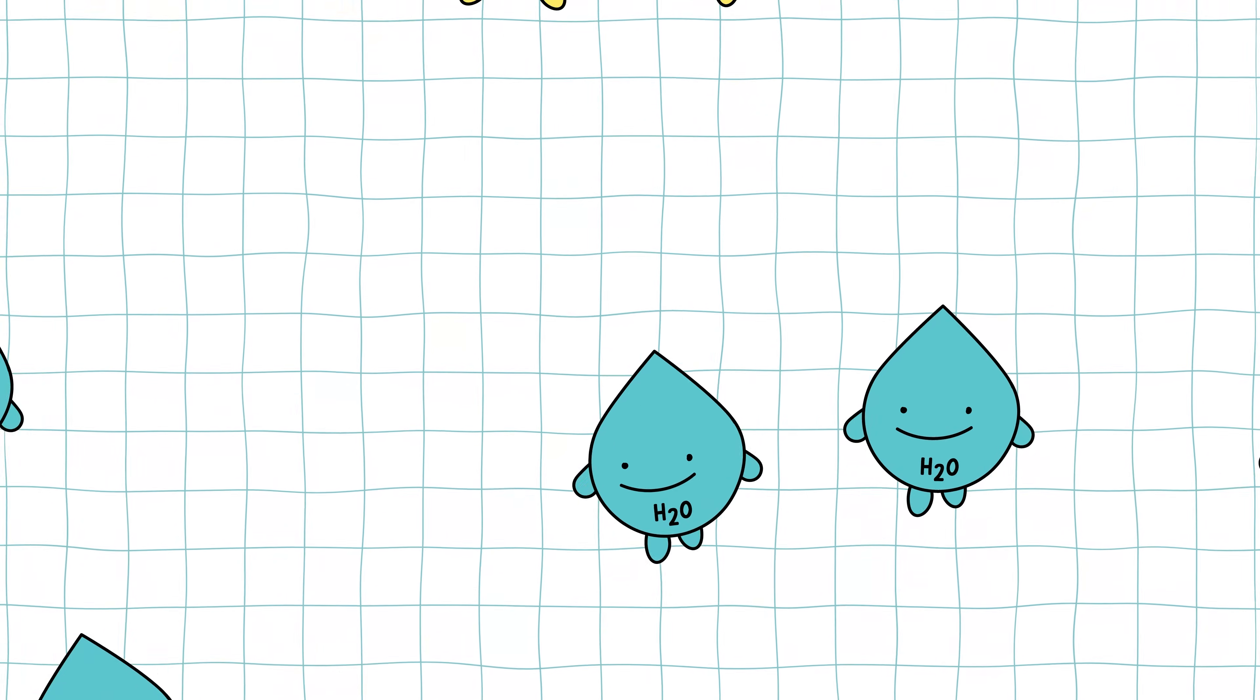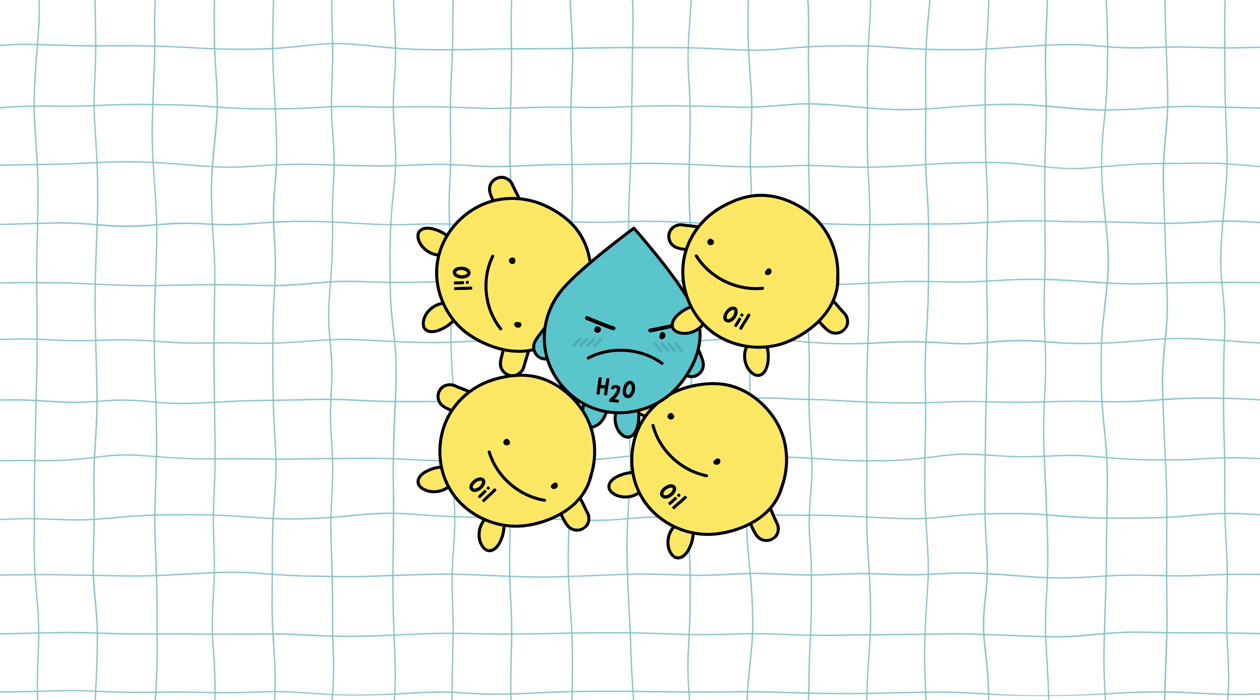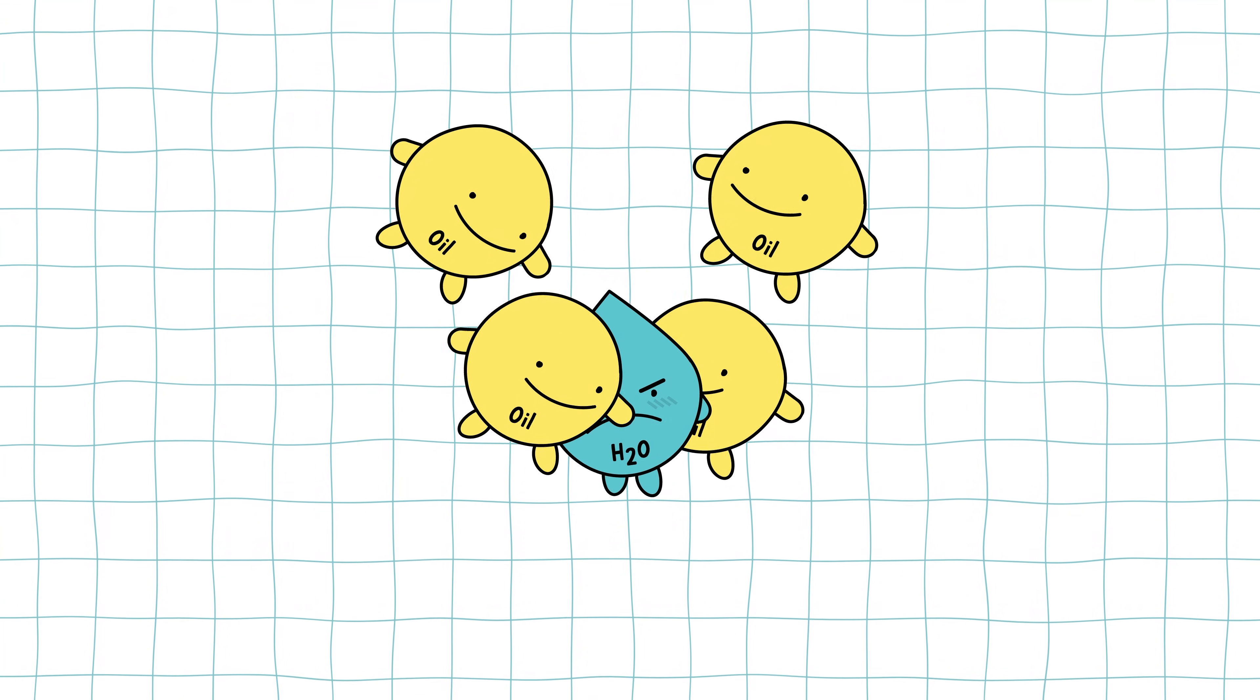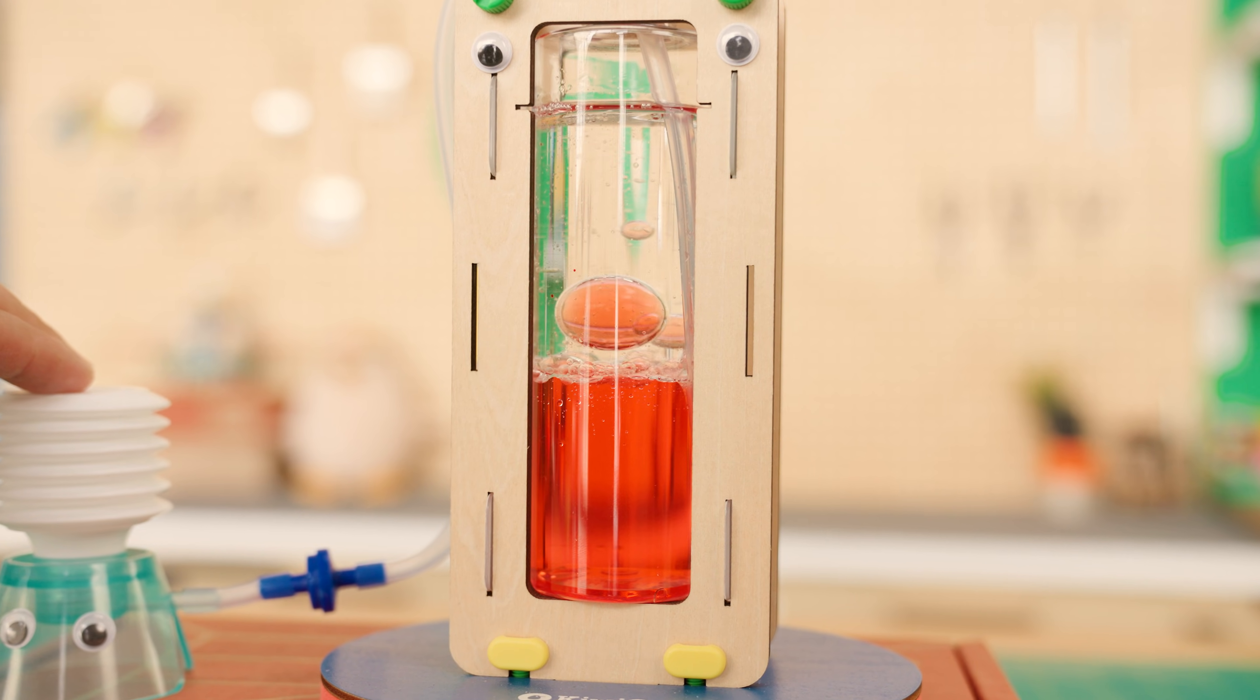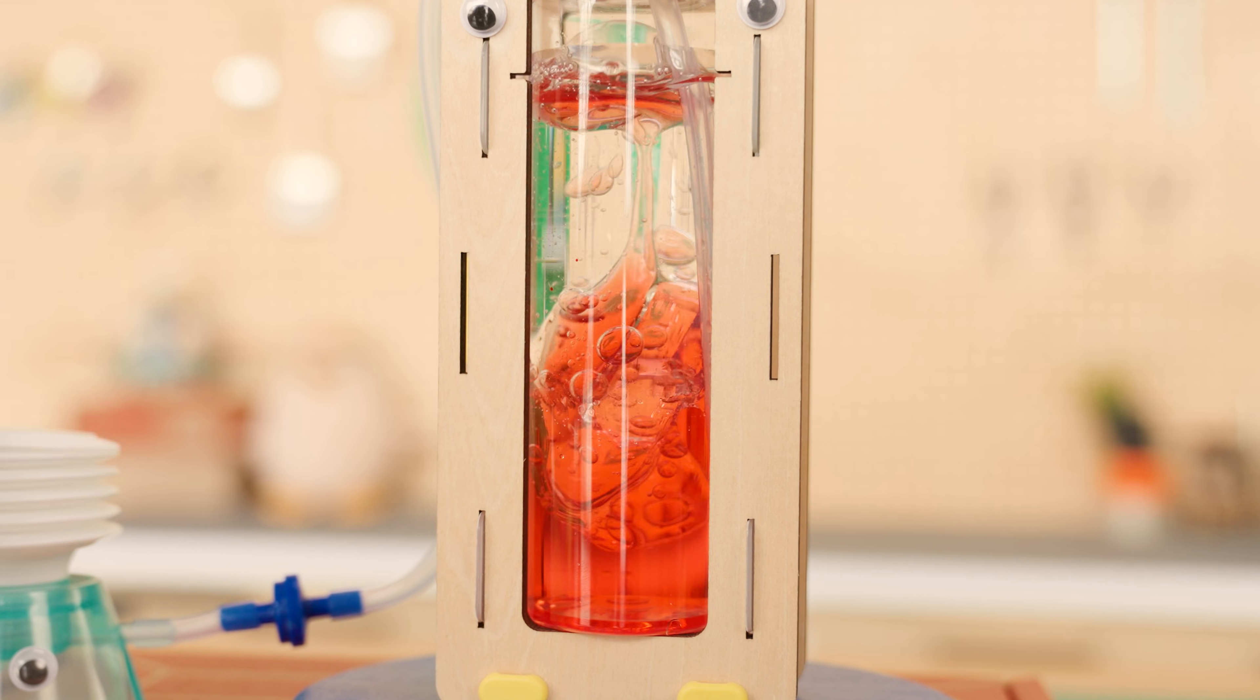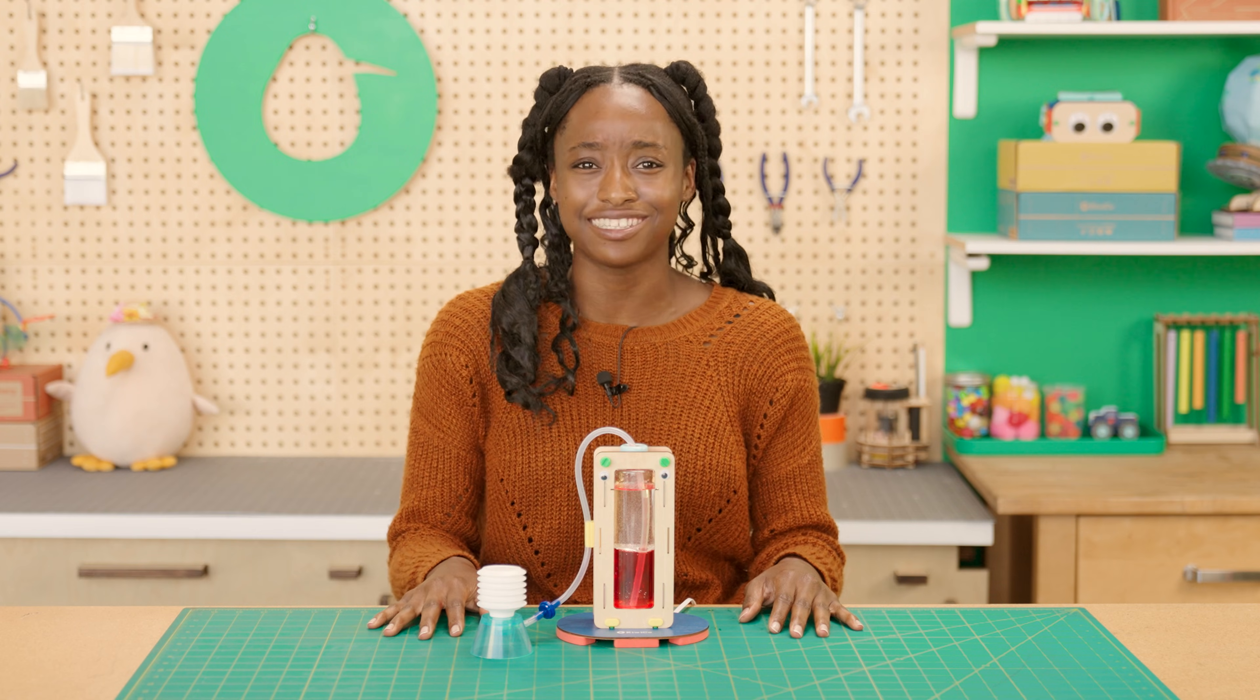But when a water molecule gets stuck between a bunch of oil molecules, it's not happy. The oil keeps pushing on the water and forcing it until the water and the oil eventually separate. So in your bubble lamp, the oil and the water never actually mix. They just push around each other in swirling blobs no matter how much you pump. Isn't science so awesome?